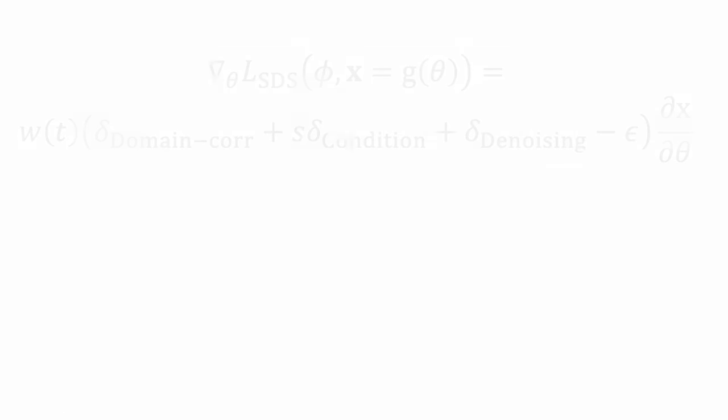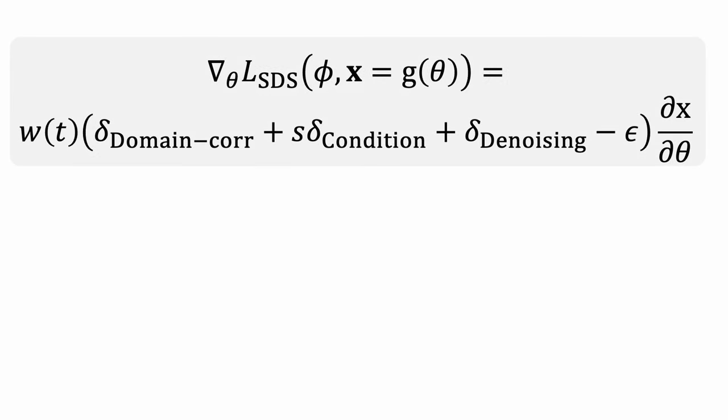So how does score distillation sampling work? The gradient update consists of a domain-correction component that tries to make your rendered image look real, a conditional component that tries to align the content with your text prompt. The third component is the difference between the predicted noise and the added noise. This is usually noisy because the inputs to these diffusion models are out-of-domain. So the idea is to keep the good ones and discard the bad ones.